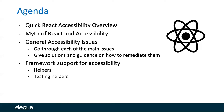Our agenda for the day is going to look like this. We're going to do a quick React accessibility overview — really just an overview of how JavaScript frameworks and React work in general. We're going to talk about the myth of React and accessibility, then the general accessibility issues, going through each of the main ones. There are a load of issues that exist within JavaScript frameworks like React; we'll cover about six or seven main ones. Then we'll talk about framework support for accessibility — helpers within your React framework out of the box, plus testing and third-party packages from Yarn or Node.